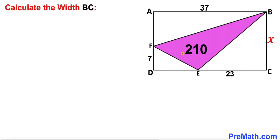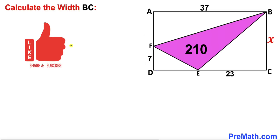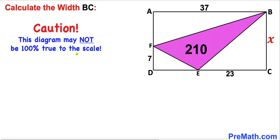Welcome to Pre-Math. In this video we have a pink triangle inscribed inside rectangle ABCD. The area of this pink triangle is 210 square units, the length AB is 37 units, EC is 23 units, and FD is 7 units. We are going to calculate the width BC and represent this width by x.